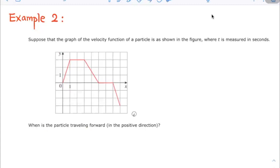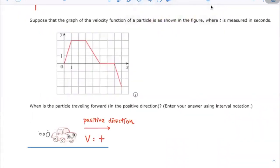The particle is traveling forward when the velocity is positive. This is a graph for the velocity function.